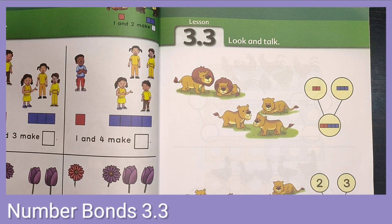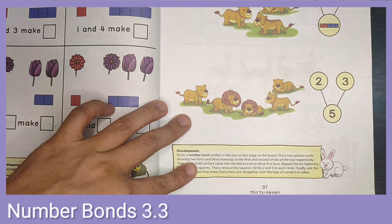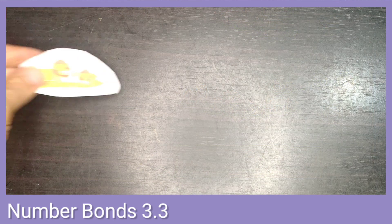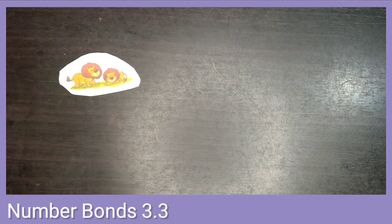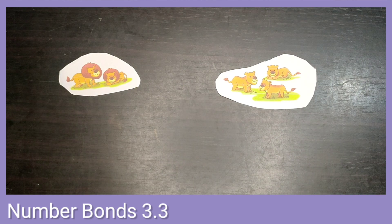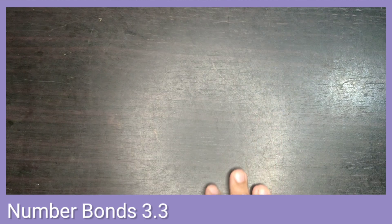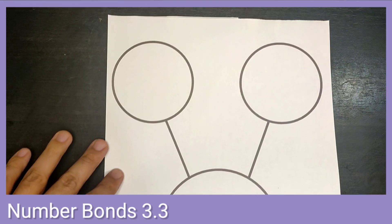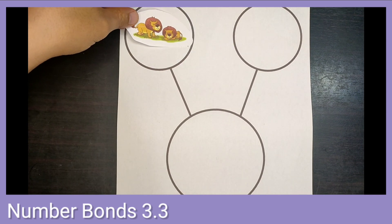Today we are going to do the activity on our textbook on page 37. We have some pictures of some lions and lionesses. Let's try to use our number bond chart — here are the lions, let's put them on our first number bond, and the lionesses on the second circle.